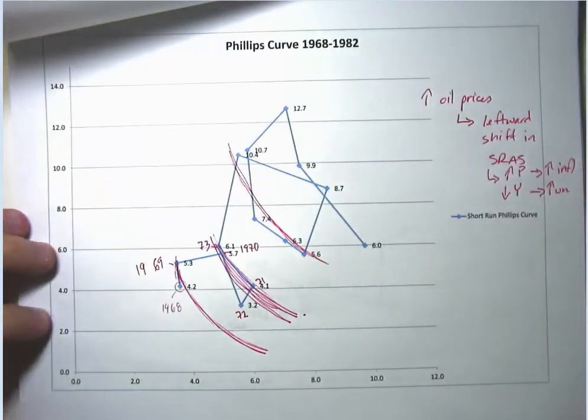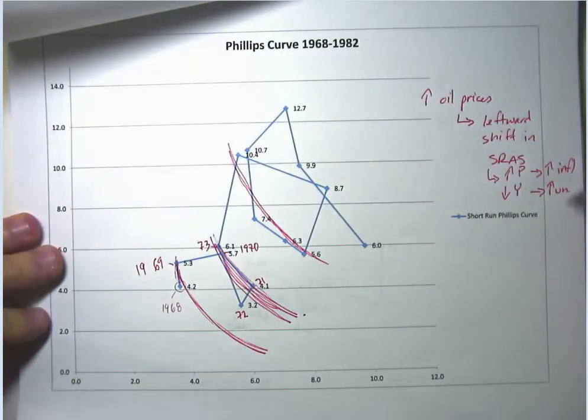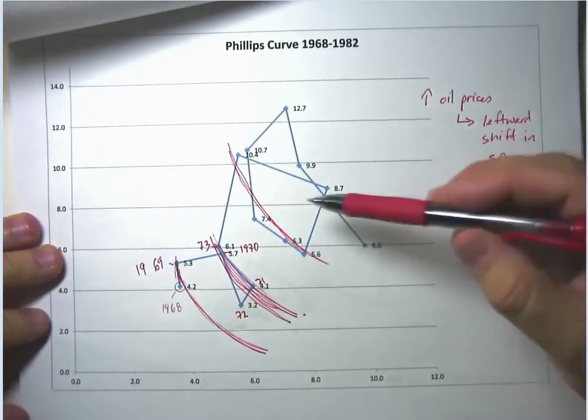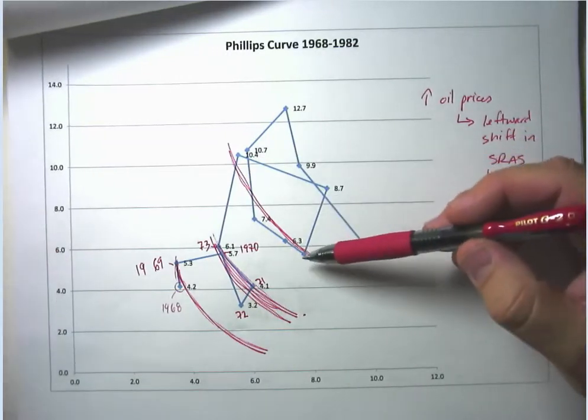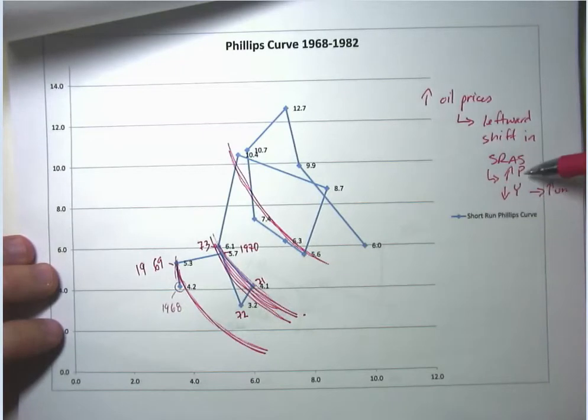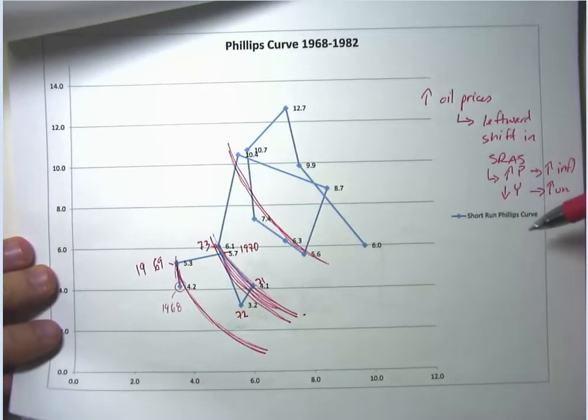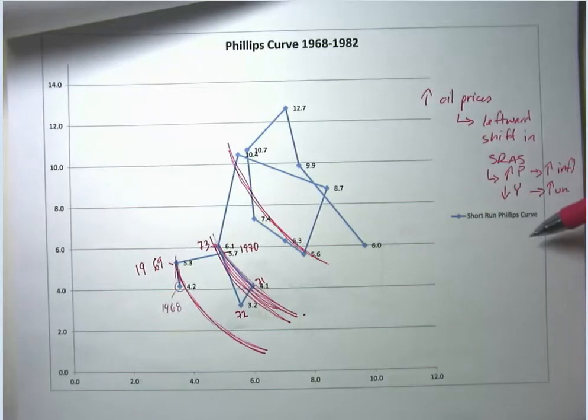Then ultimately what the Federal Reserve does is it faces a choice now. It can go ahead and tighten monetary policy to try and fight the inflation, but that will cause unemployment to go up. Or it can go ahead and keep monetary policy what's called accommodating and mostly worry about making sure unemployment doesn't get too high and sort of not worry so much about the inflation.